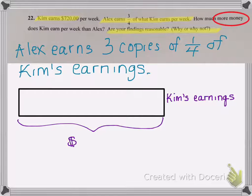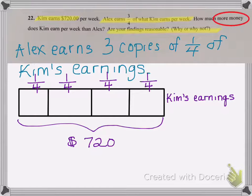So her total earnings are $720. We want to divide that fraction bar up into four equal parts.